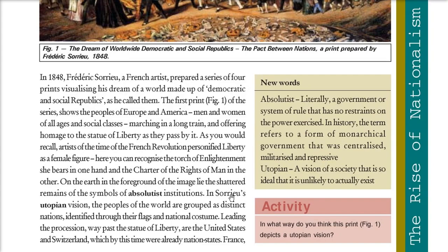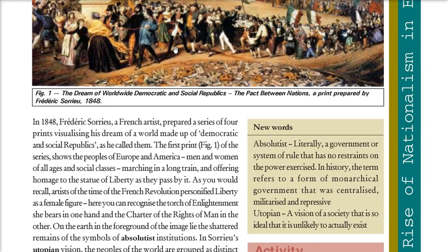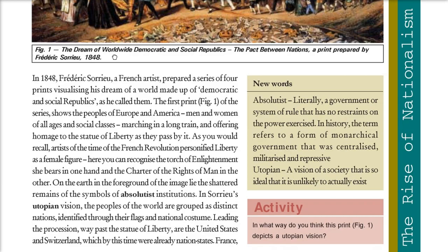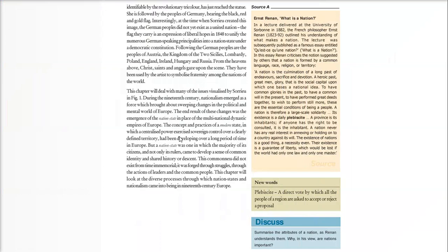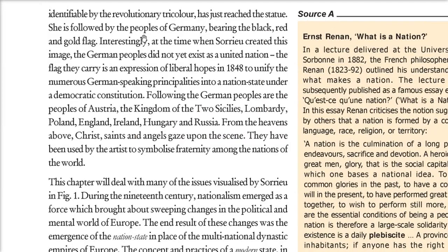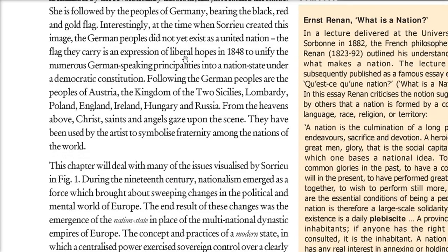Sorrieu has a utopian vision — the people of the world grouped as distinct nations, identified through their flags and national costumes. The leaders here are the United States and Switzerland because these states had already become nation states. France is shown bearing the revolutionary tricolor, but Germany is followed by a black, red, and golden flag. When this image was created, the German people did not yet exist as a united nation. This is the expression of liberal hopes in 1848 — to unify all German-speaking principalities under one nation with a democratic constitution.